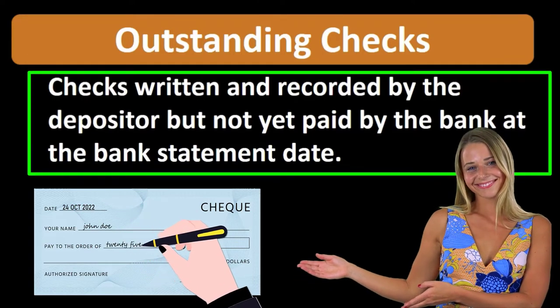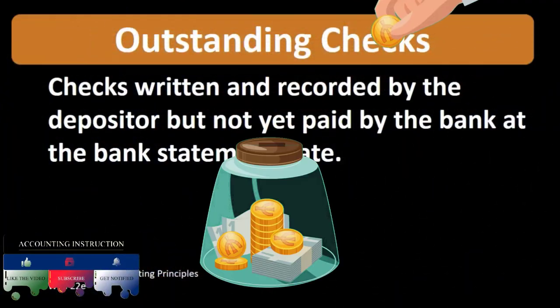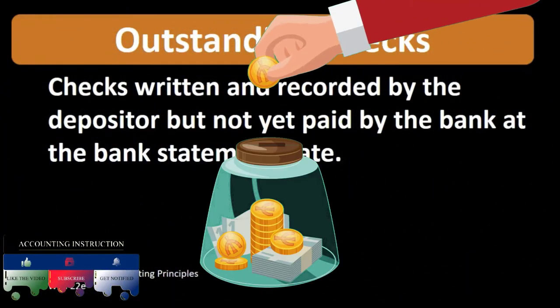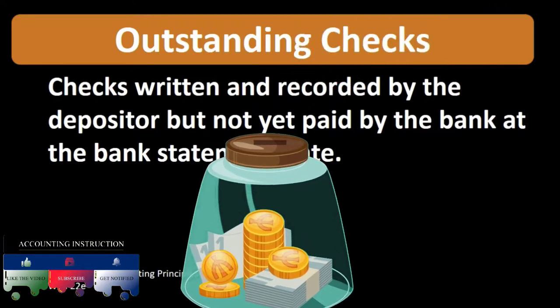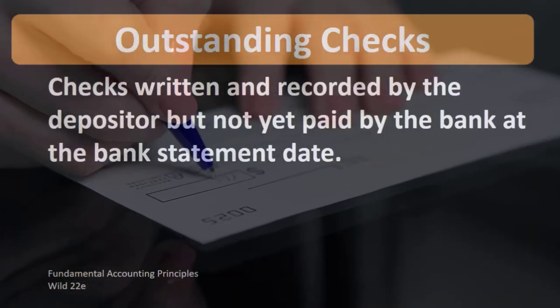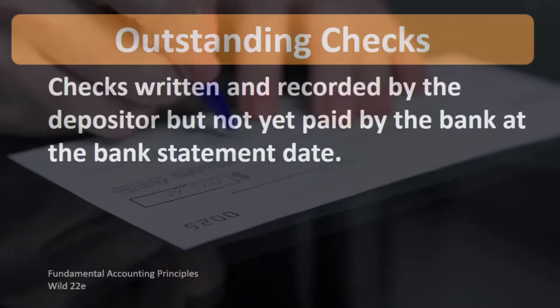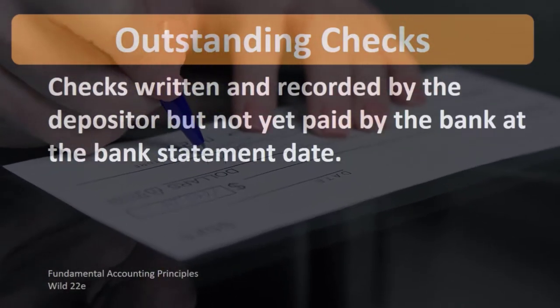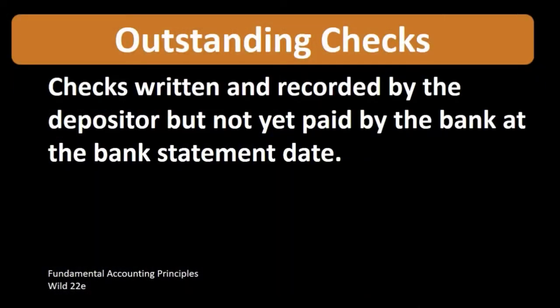When we're thinking about outstanding checks, we're basically thinking about those checks that we have written. Therefore, on our books, we have them decreasing the amount of our checking account balance. However, they have not yet cleared the bank, given the fact that the check has to first go to the recipient, they have to put it into their bank, and their bank needs to contact our bank before the transaction can take place on the bank side of things.